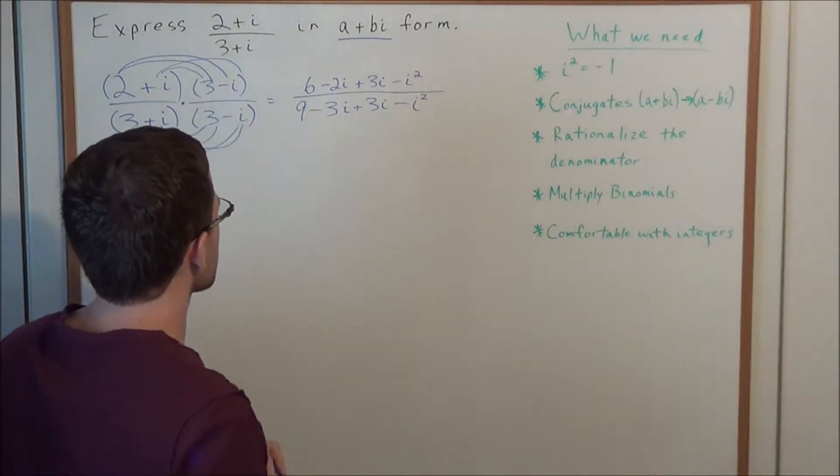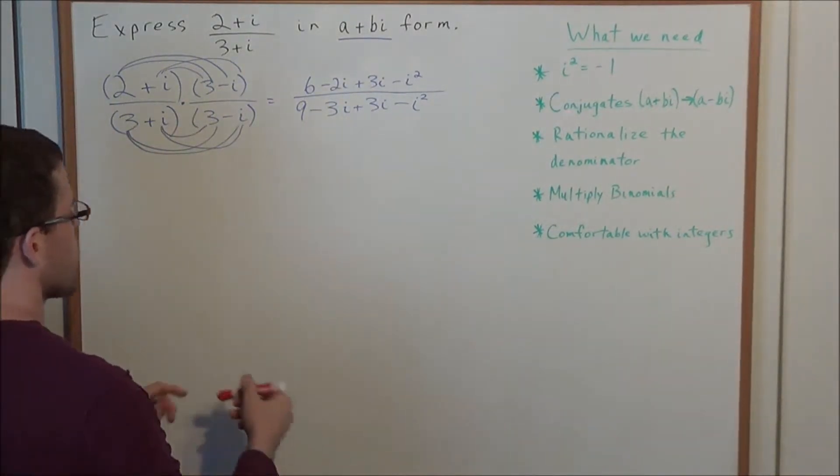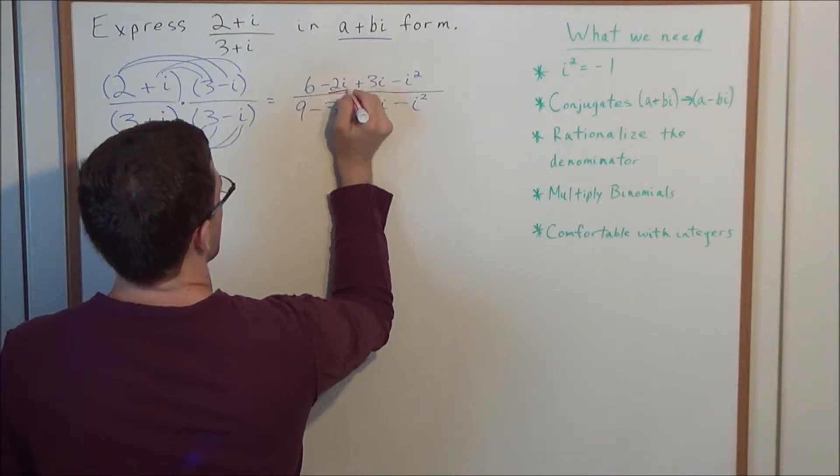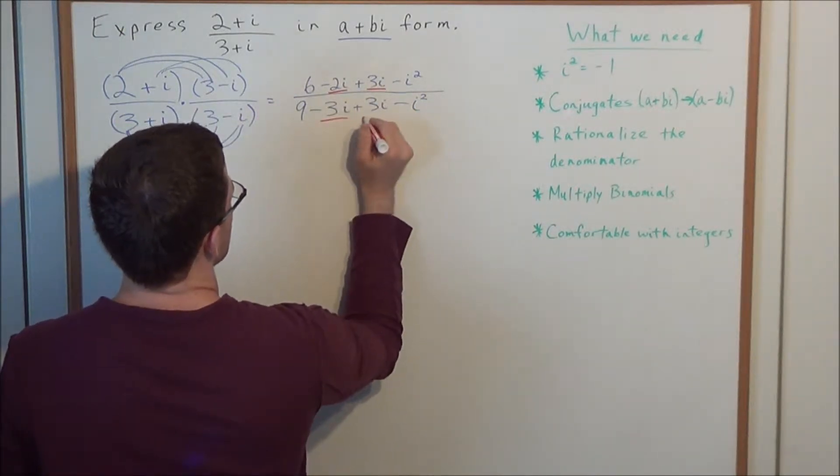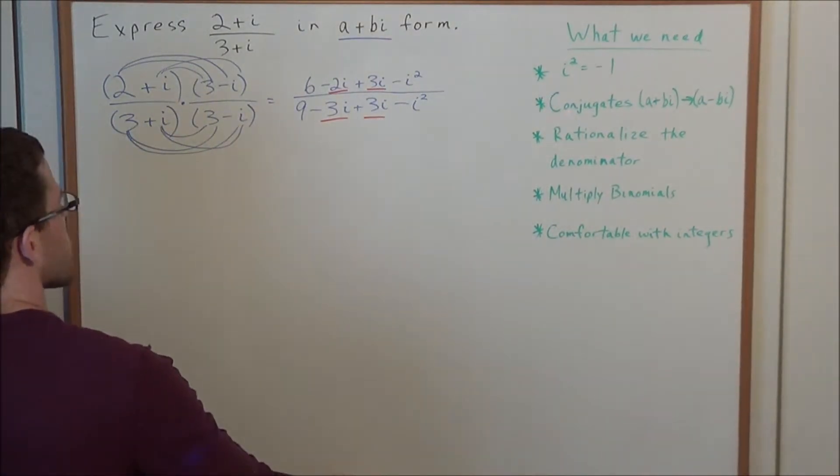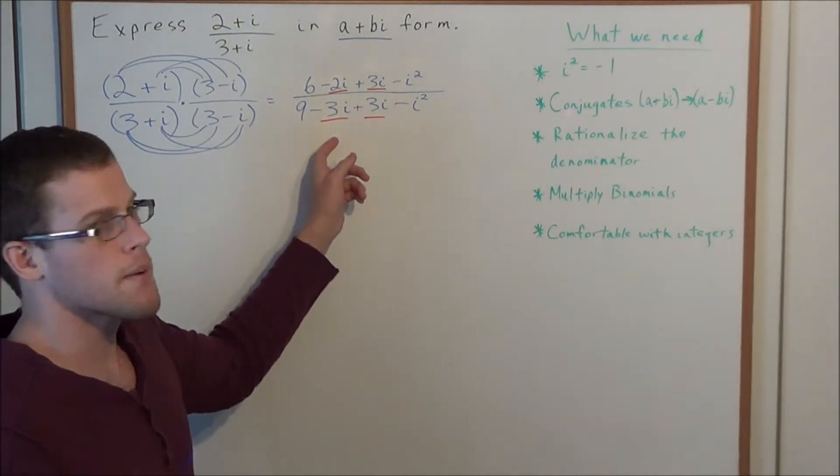So now, before we move to the next step, let's go ahead and look at what we need to combine. We need to combine like terms. So we have common i terms in the numerator and common i terms in the denominator. So now in the denominator, what do we have? We have a negative 3i and a positive 3i.